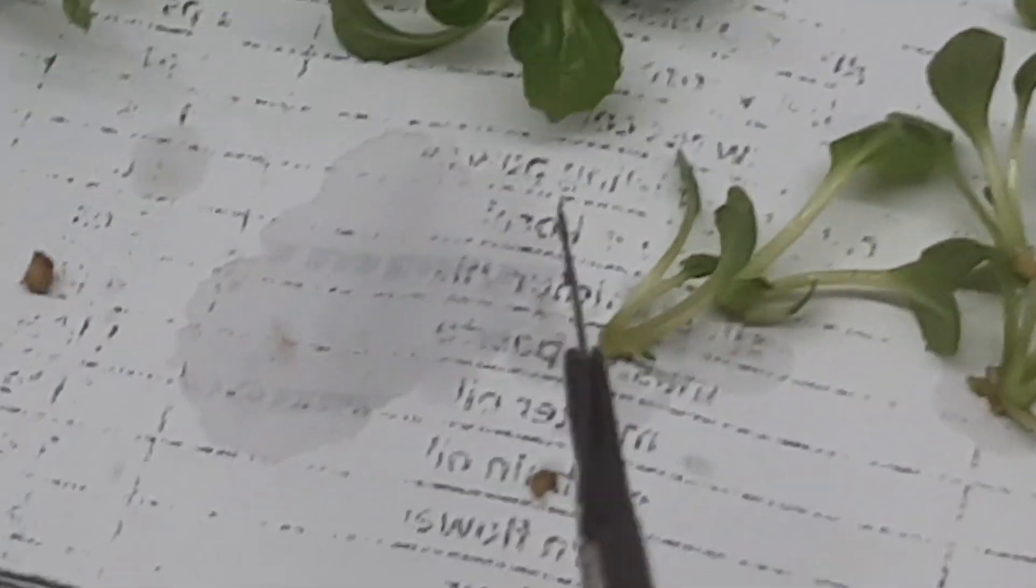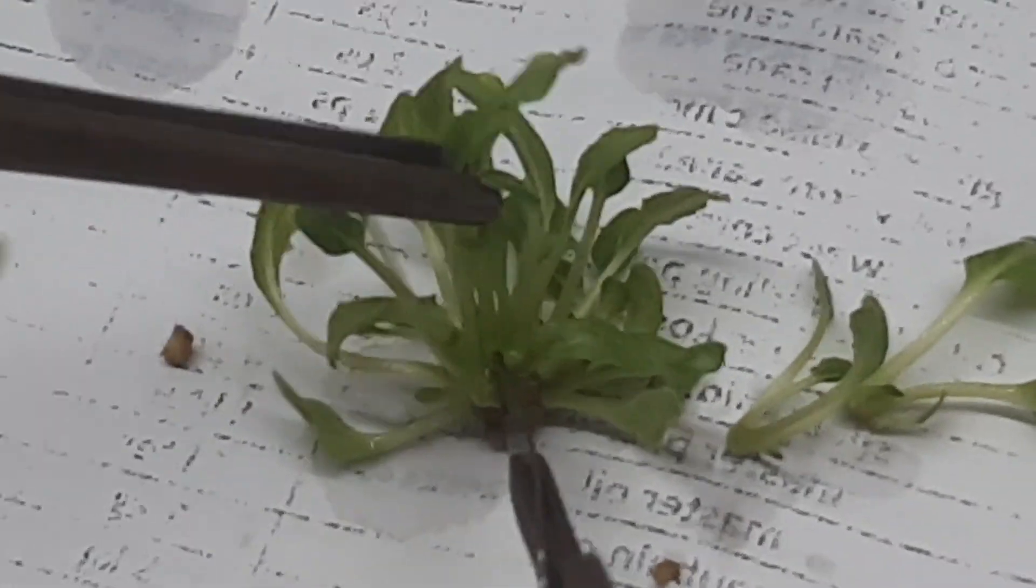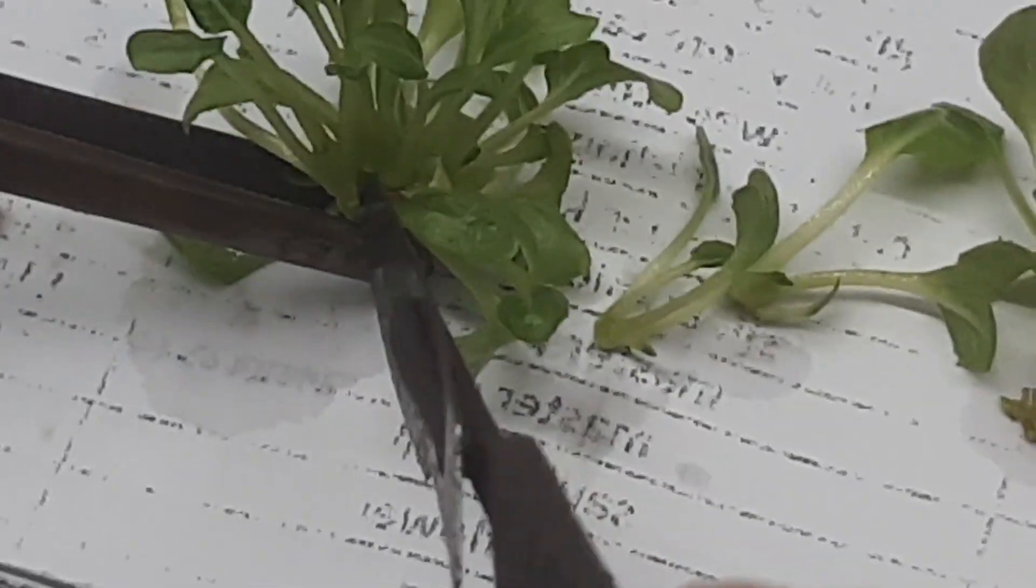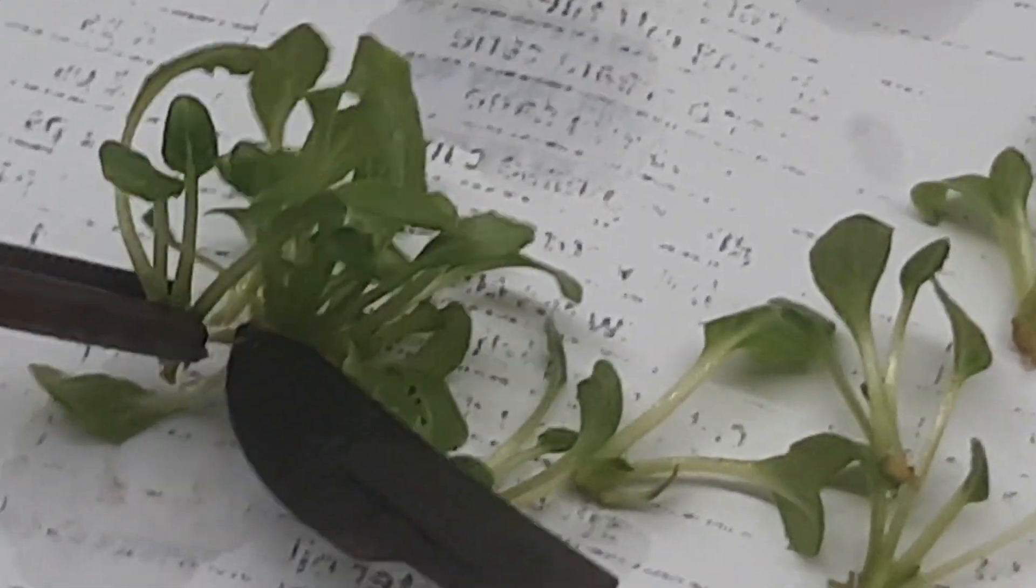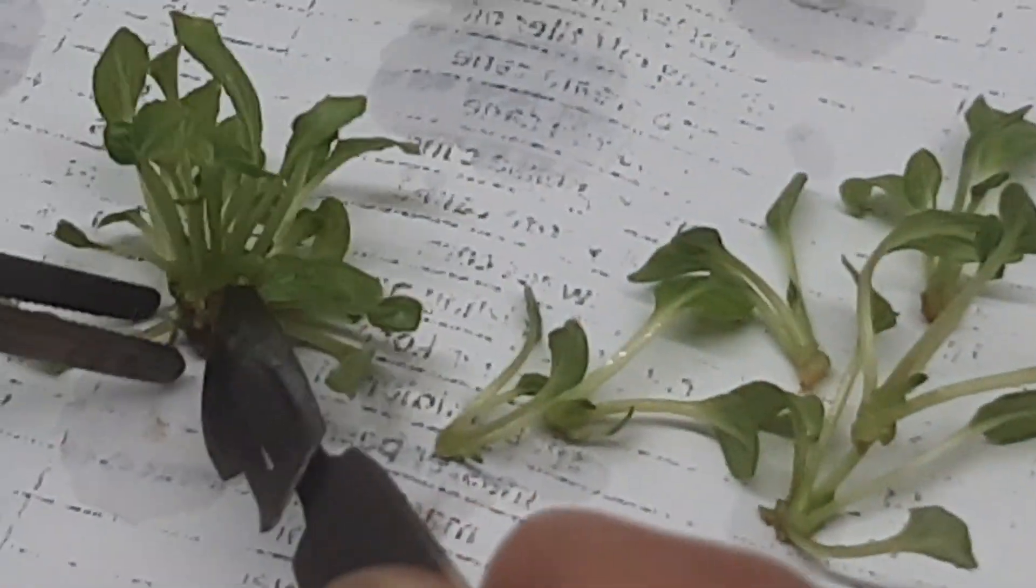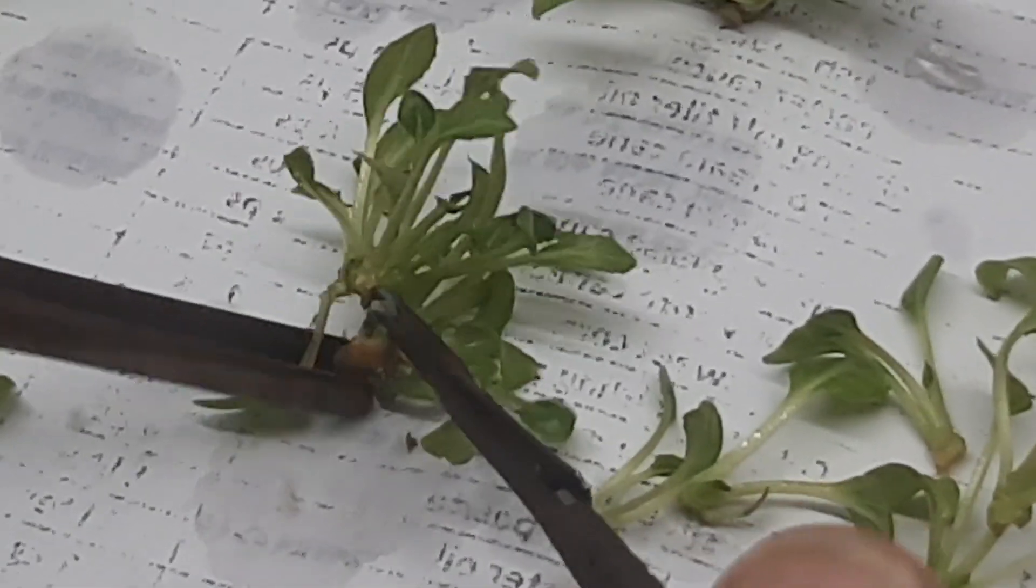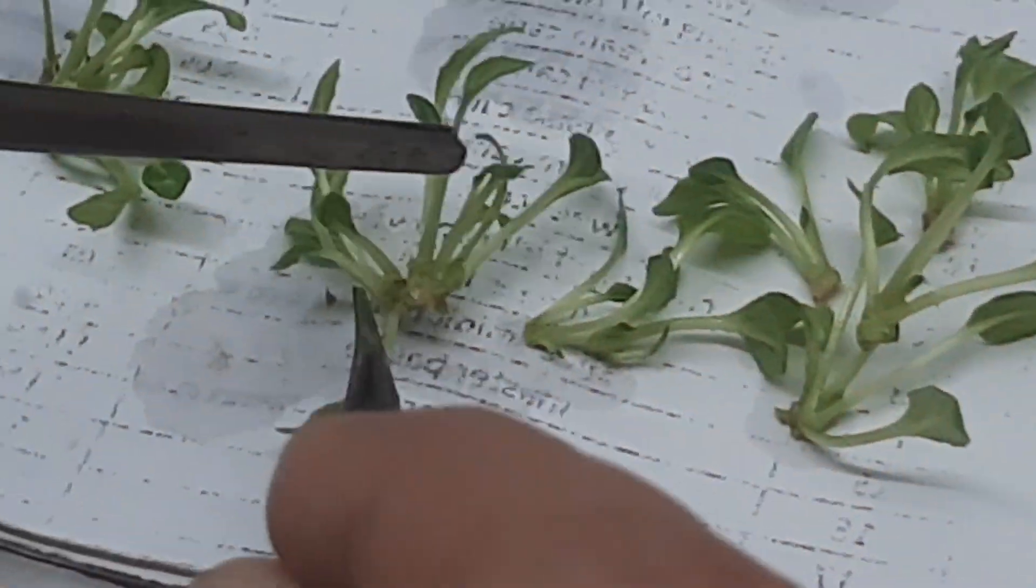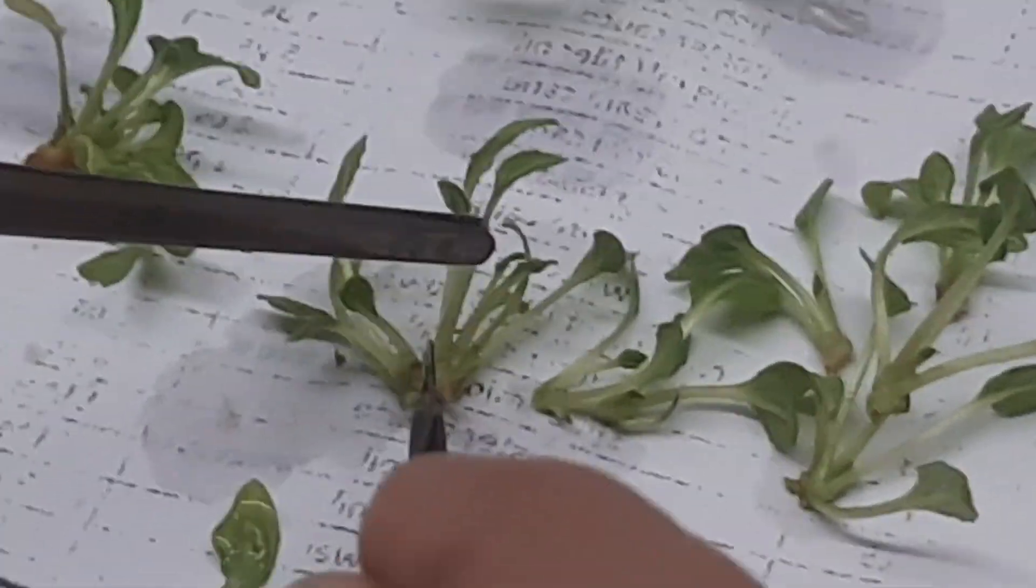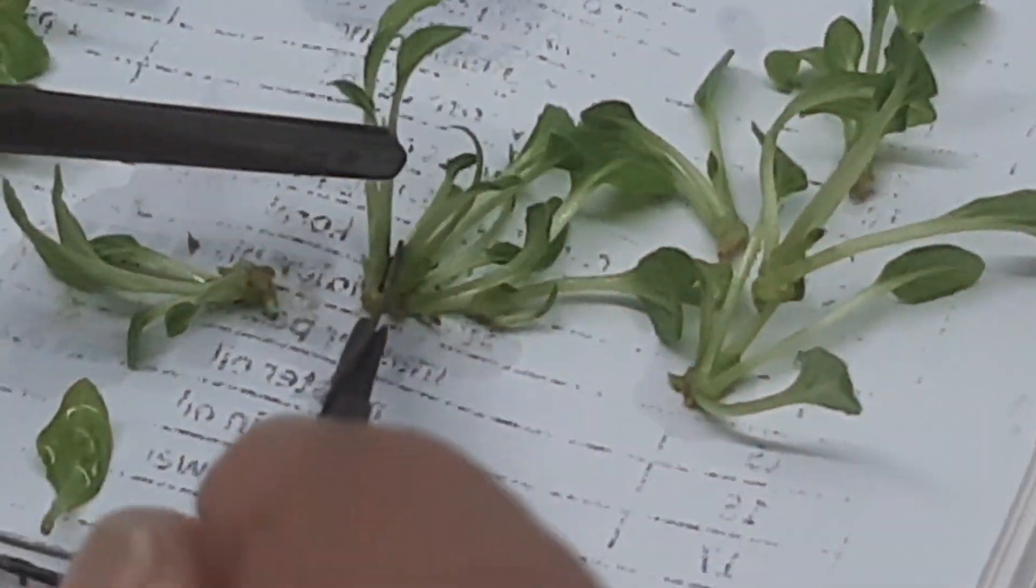I can give you a close view. You can see how he is splitting the multiple shoot into single shoots. This is very important in the case of micropropagation. If you are unable to develop the multiple shoot, then the total micropropagation system will not be economically viable.